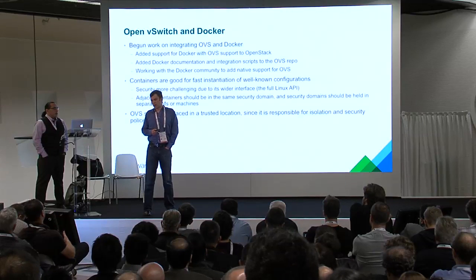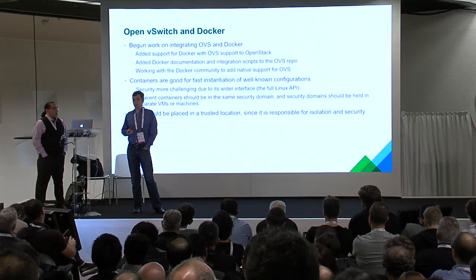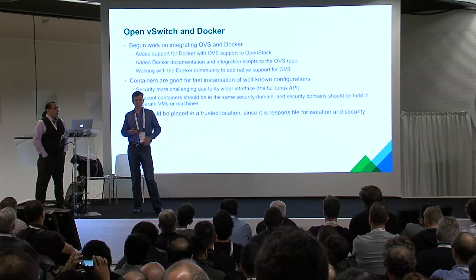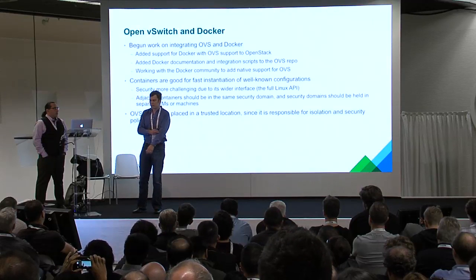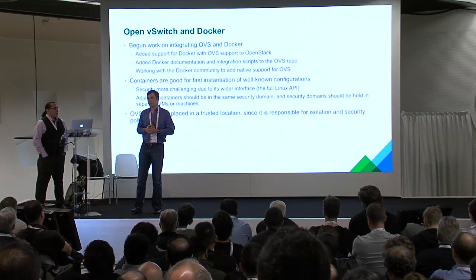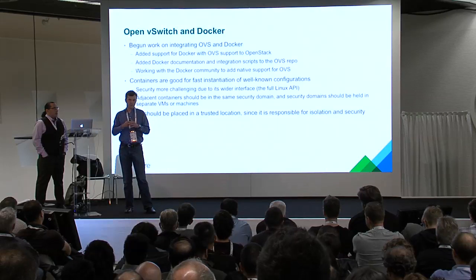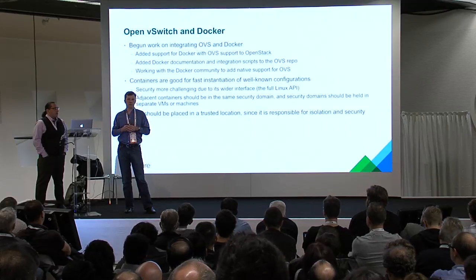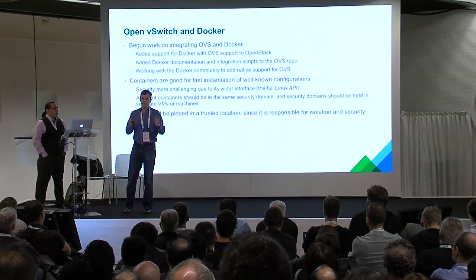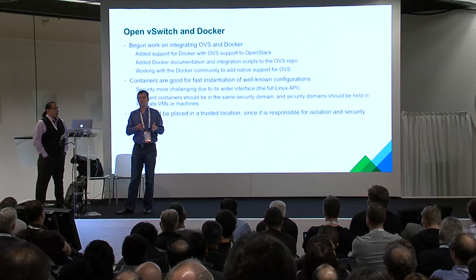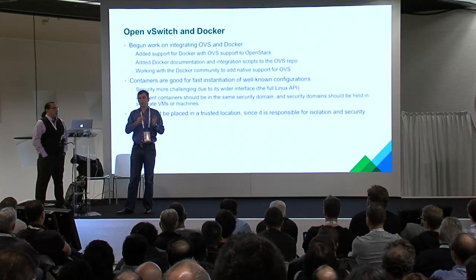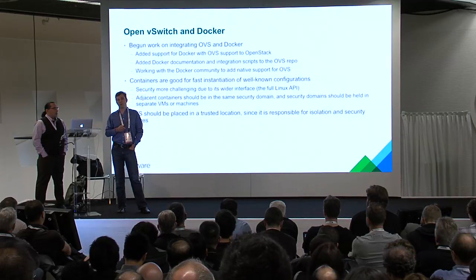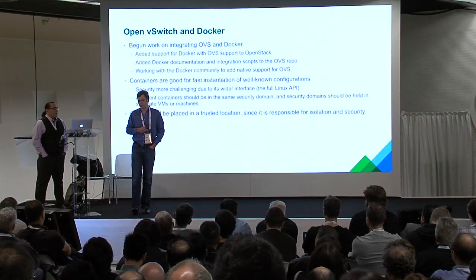We view Docker as good for instantiation of well-known configurations, but security can be more difficult because you have to protect against the full Linux API. The way we've been thinking about it: if you have security domains, containers can be adjacent to each other. But if, for example, you were a service provider with different tenants, you may not want to run those adjacent to each other — instead, run those in different VMs or on different bare metal hosts.